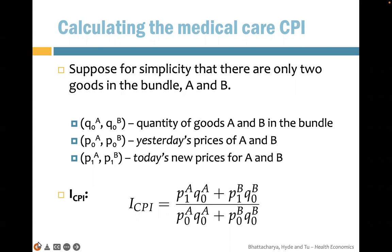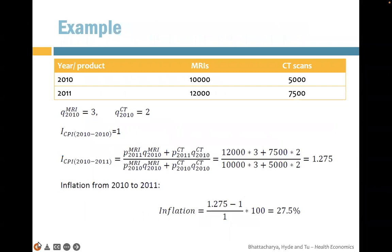Yesterday's prices of A and B are P0A and P0B, while today's prices are P1A and P1B. We get the expenditure of today divided by the expenditure of yesterday. For example, suppose the bundle is three MRIs and two CT scanners. Prices for MRI and CT scans differ between 2010 and 2011. We get the total expenditure in 2011 divided by total expenditure in 2010. This index is 1.275, so subtracting 1 and multiplying by 100% gives us 27.5%.